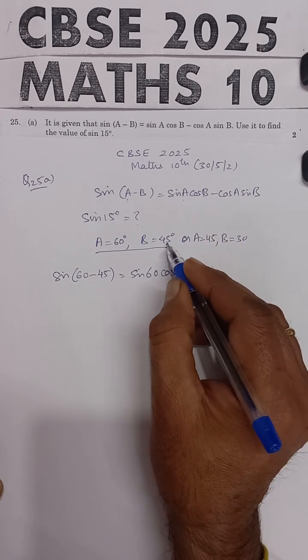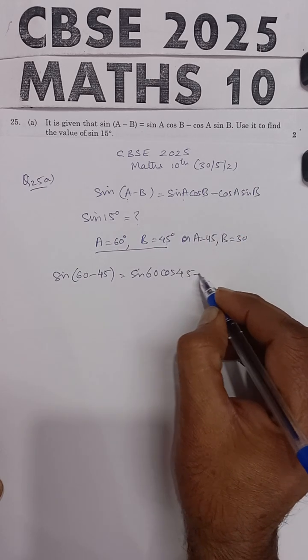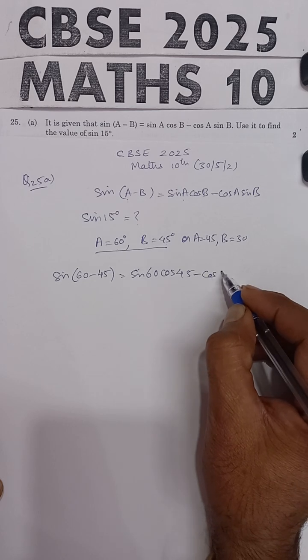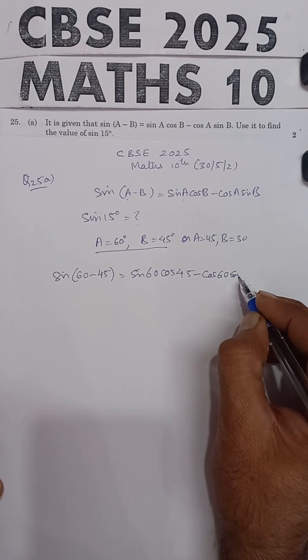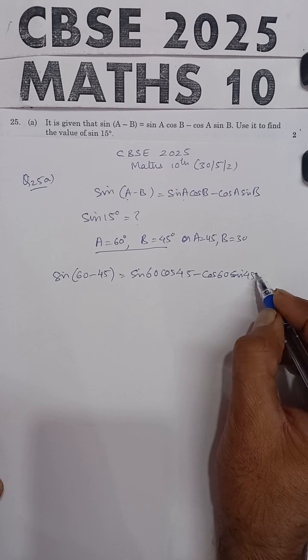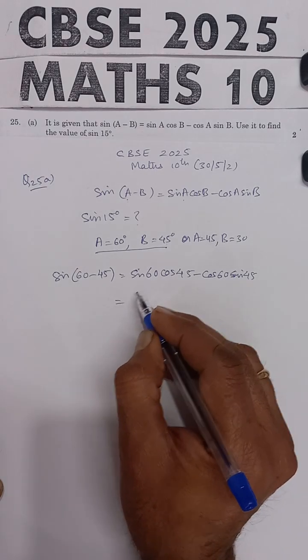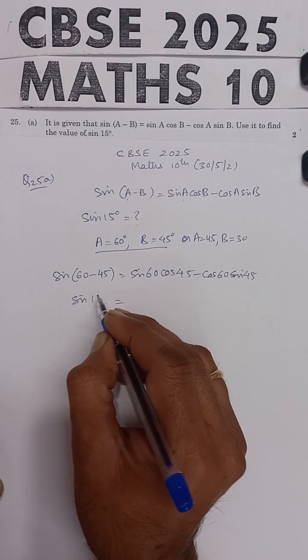minus cos of A is 60, minus sine of B is 45. So, substitute the values. This will be sine of 15 degrees.